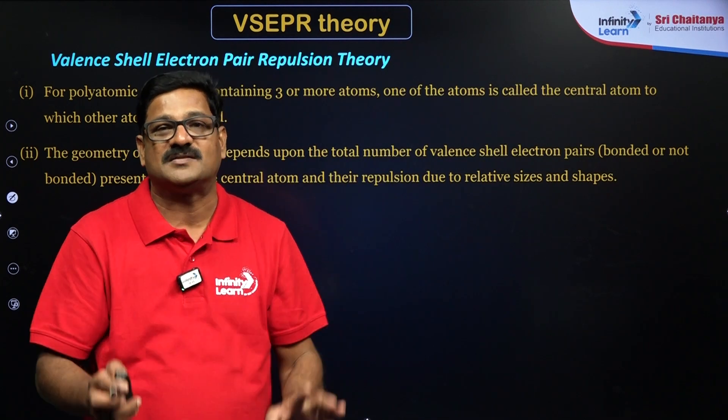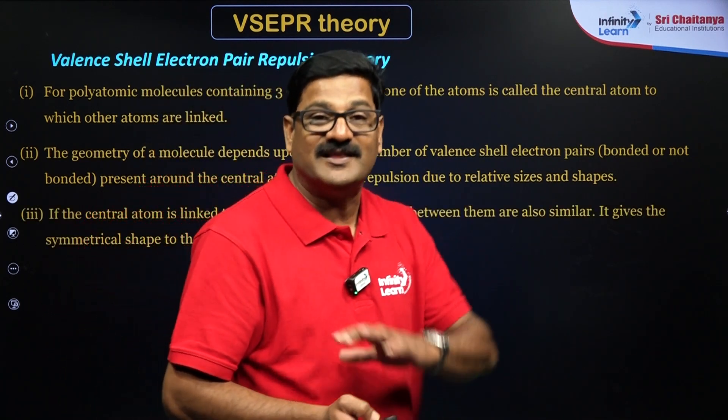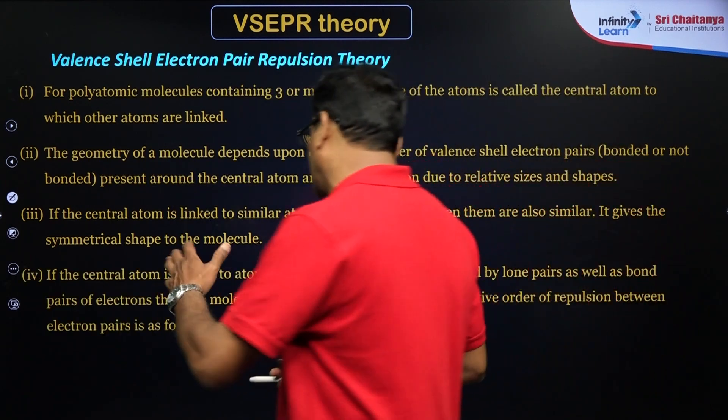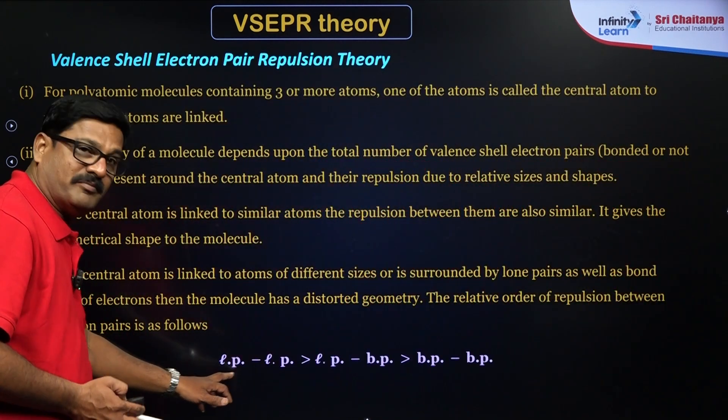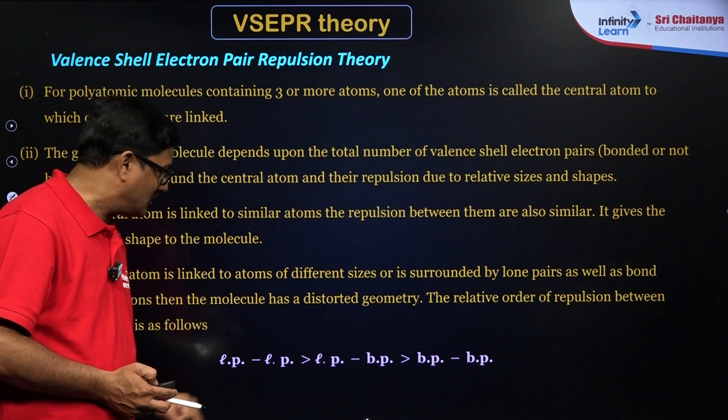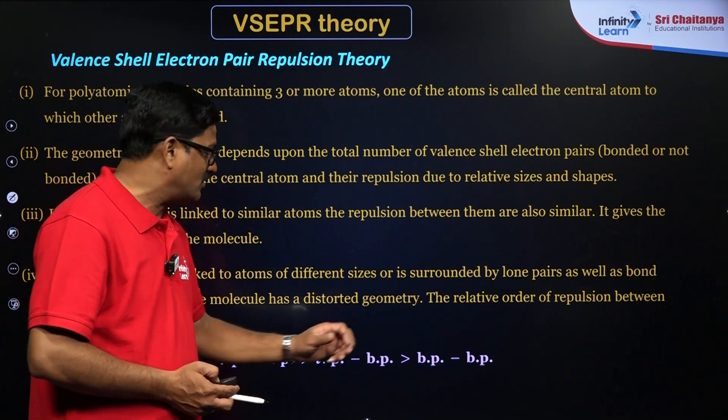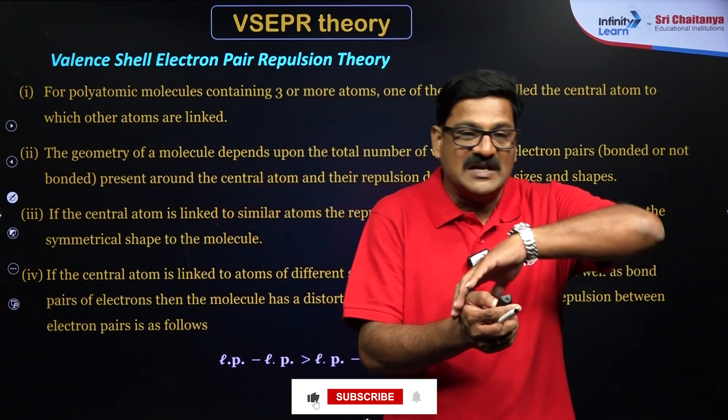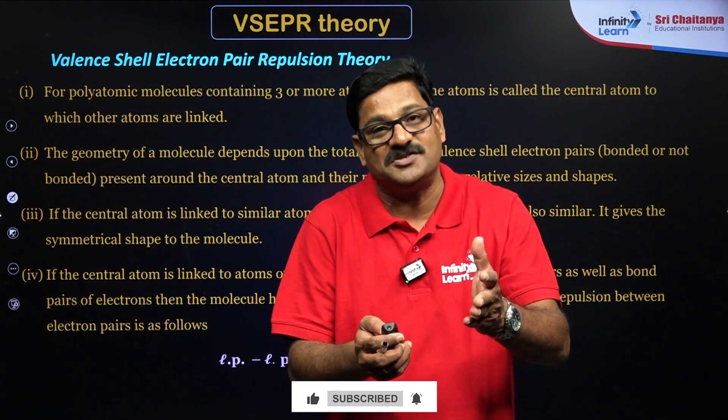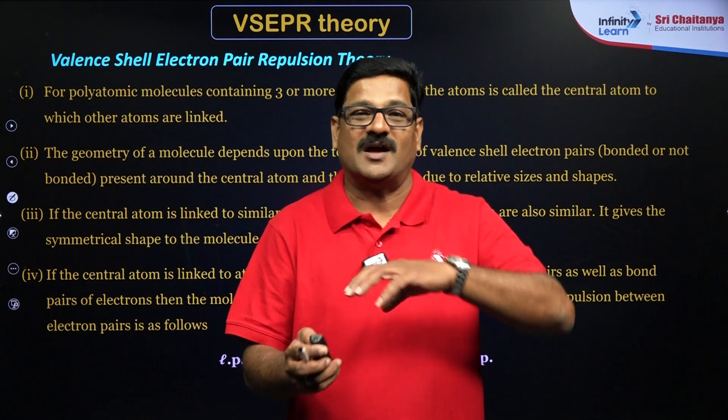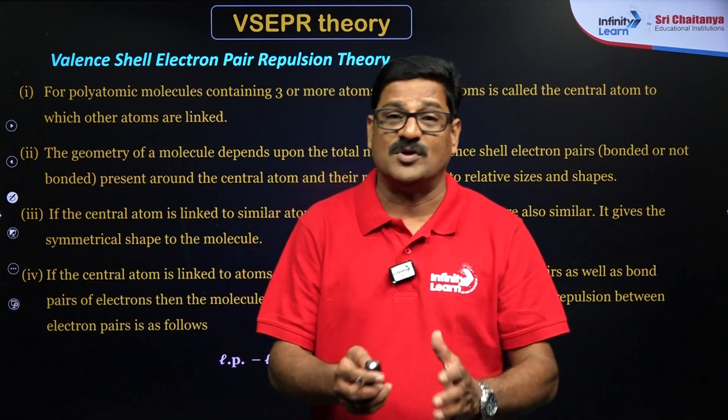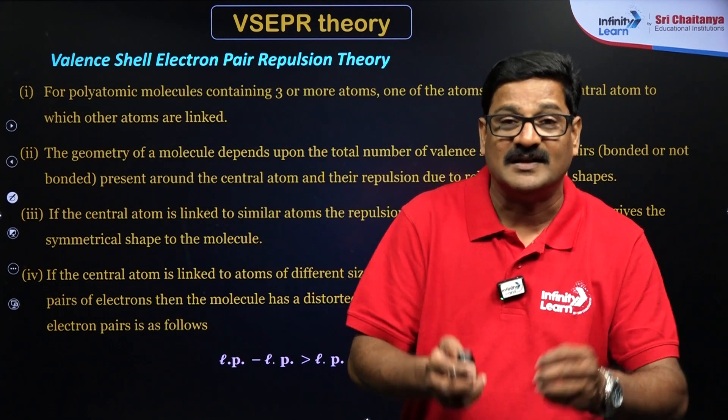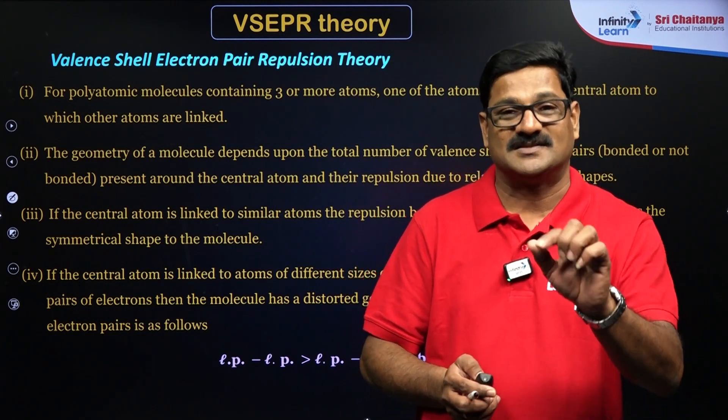And the central atom, these lone pairs and bond pairs are arranged in such a way that they have made repulsions among them. So if you see, the repulsions among them is going to be: lone pair-lone pair repulsion is greater than lone pair-bond pair repulsion is greater than bond pair-bond pair repulsions. So these electron pairs around the central atom are arranged in such a way that the repulsions among them are minimum. So minimum repulsion gives the shape.